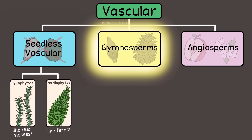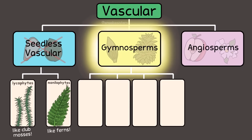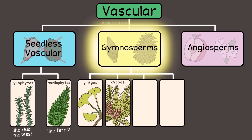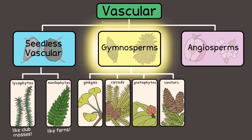The second category: gymnosperms. These include several phyla — one with ginkgo, one with cycads, one with gnetophytes, and one with conifers. The word gymnosperm means naked seed, as they don't have their seeds enclosed like the next group. Instead, many gymnosperms have cones. Gymnosperms have neither flowers nor fruit.